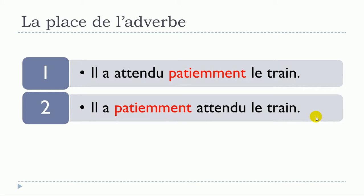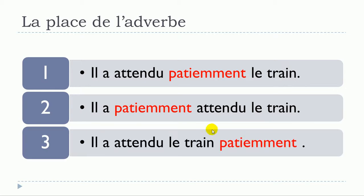There is also a third option: it would be possible to put the adverb at the very end — il a attendu le train patiemment. So let's review the three options: first, il a attendu patiemment le train; second, il a patiemment attendu le train; and third, il a attendu le train patiemment.